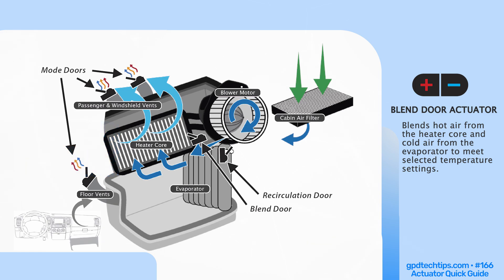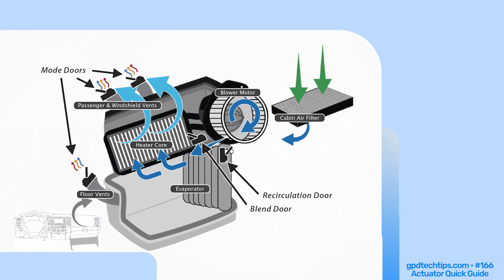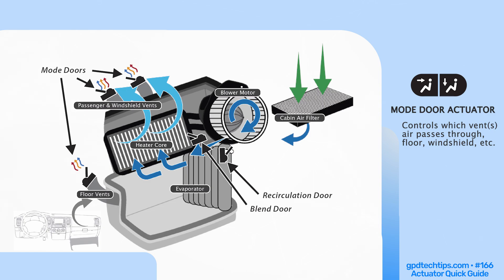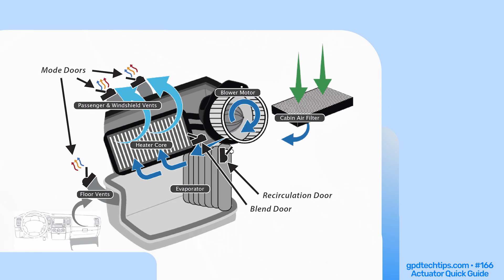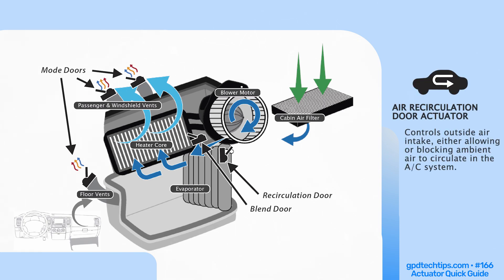The blend door actuator can open and close at various degrees to create the desired temperature by blending warm air from the heater core, generated by engine coolant, and cool air from the evaporator, generated by refrigerant. Mode door actuators open and close to direct airflow to selected vents like floor, face, windshield, etc. The air recirculation door actuator allows or blocks ambient air; when in use, the recirculation door is closed, forcing the system to reuse air inside the vehicle.